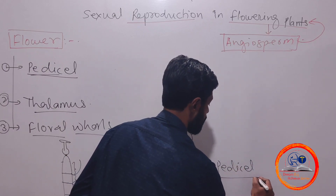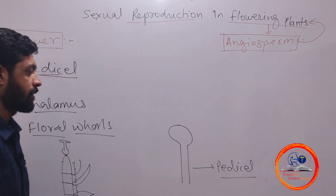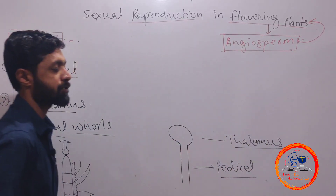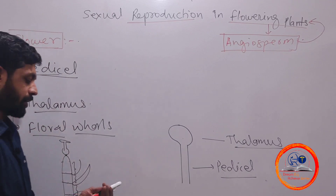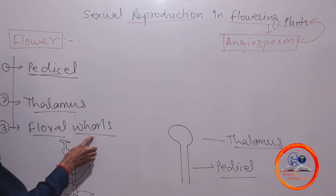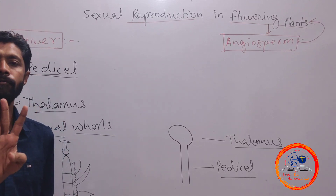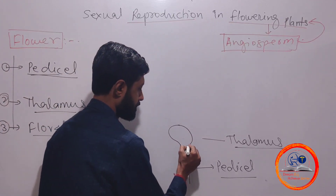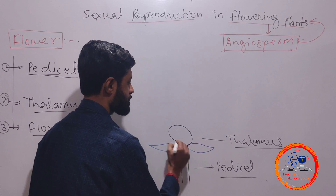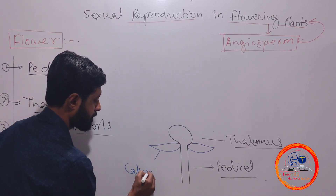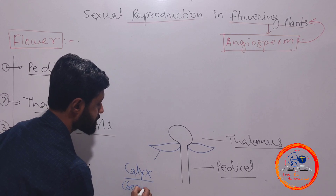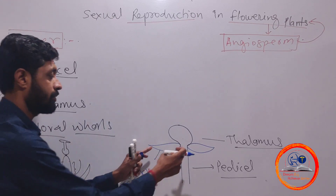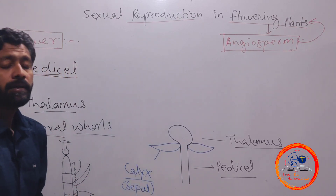The pedicel is the stalk of the flower that raises it, and on the thalamus — also called the receptacle — there is a presence of floral whorls. A flower has four floral whorls. The lowermost floral whorl is called the calyx, and the individual member of calyx is called a sepal. The calyx is green in color.